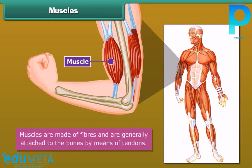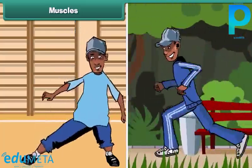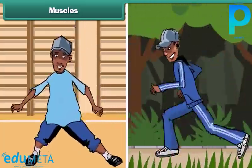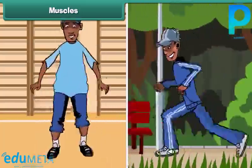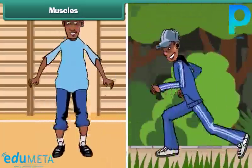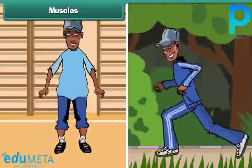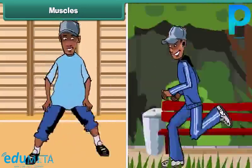Muscles are made of fibers and are generally attached to the bones by means of tendons. Muscles, along with bones, help to give shape to the body. They also help the different parts of the body to make movements.